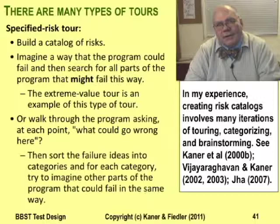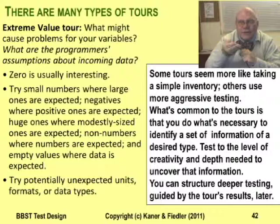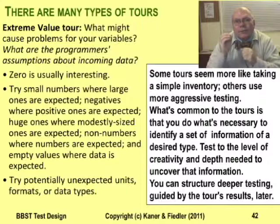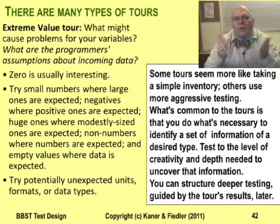The variable tour asks what variables the program has and how it uses them. The extreme value tour focuses on each variable one at a time, asking what values of this variable might be troublesome or high risk. In the typical extreme value tour, you try the potentially troublesome values, and as you gain an impression of the program's vulnerability to extremes or different types of special cases, you gain a foundation for systematically checking all the variables for these types of problems. You won't have time to check every variable for every risk, but you can make time for checking the risks that you know the program is likely to have trouble with.